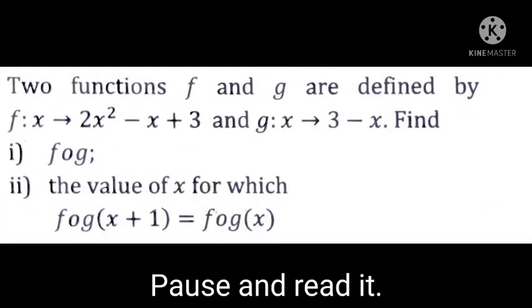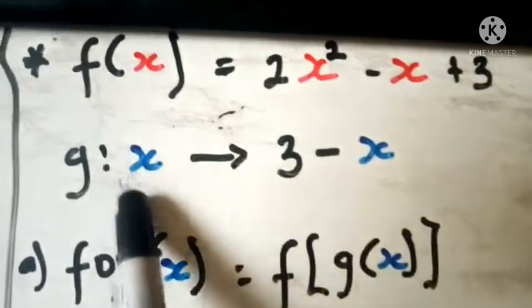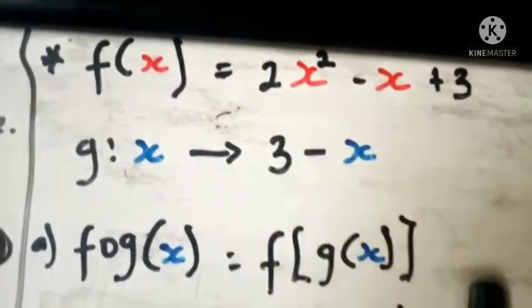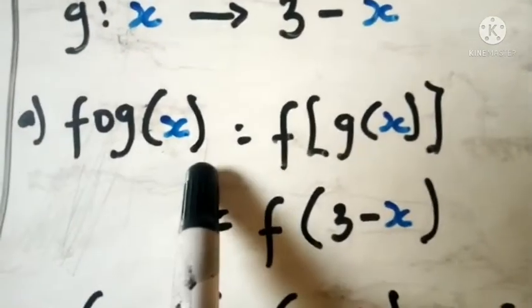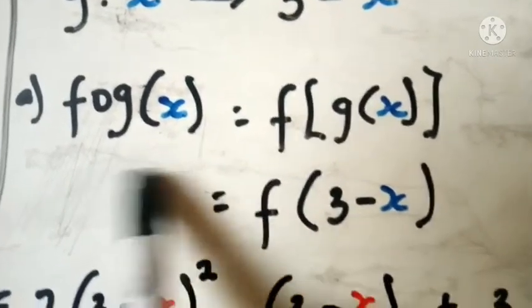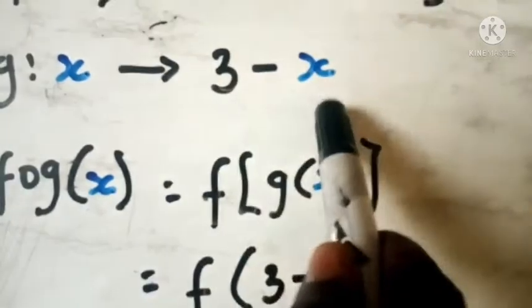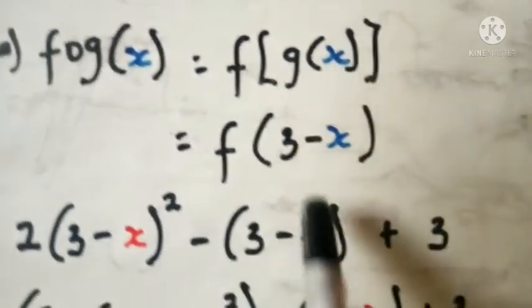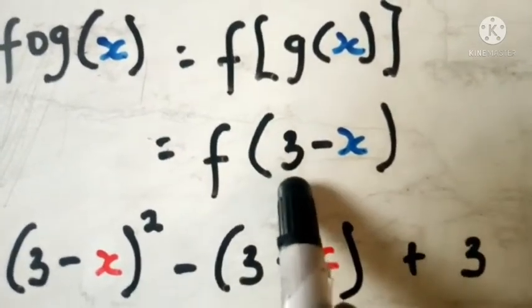Now let's look at a second example. The same process applies — we have two different functions, a first function and a second function. The machines are different, like machines from different manufacturers. They say you should find f of g(x). The same process: G is the first machine we wash our input inside. So let's bring the second machine out and deal with the first one first. The first machine is defined as 3 minus x.